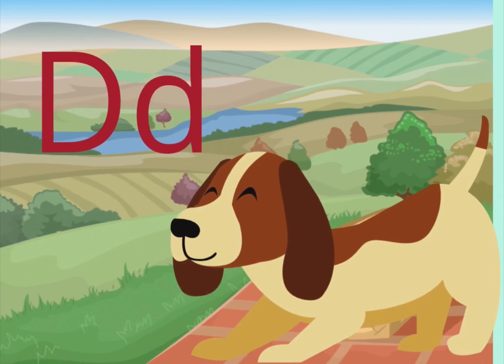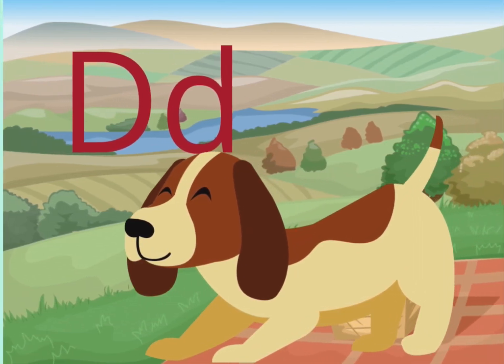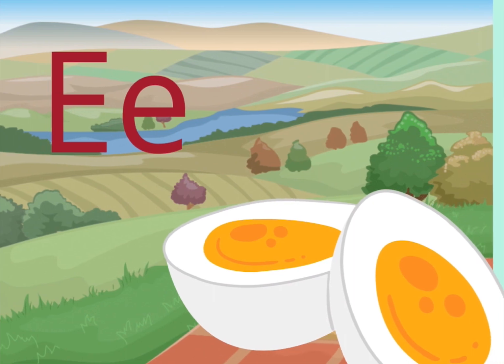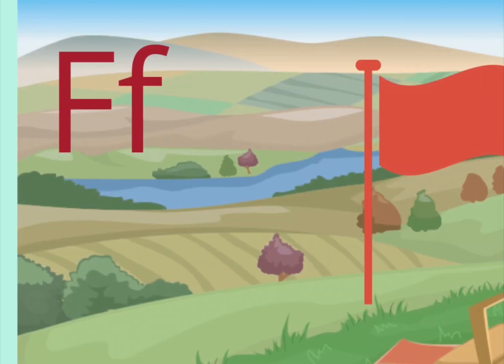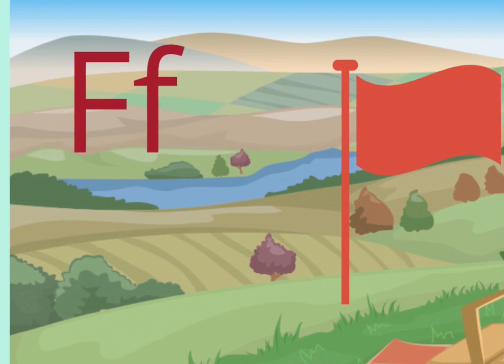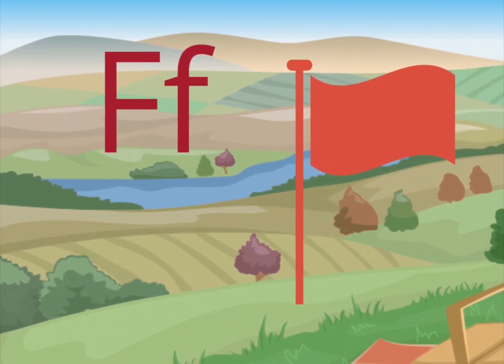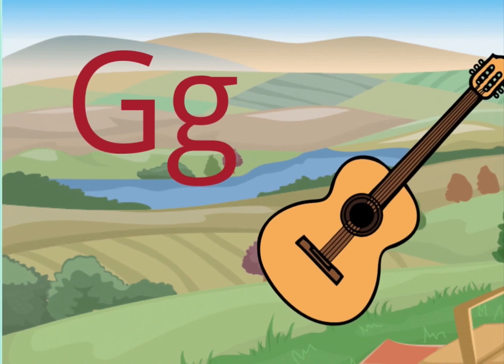D is for dog, E is for egg, F is for flag, G is for guitar.